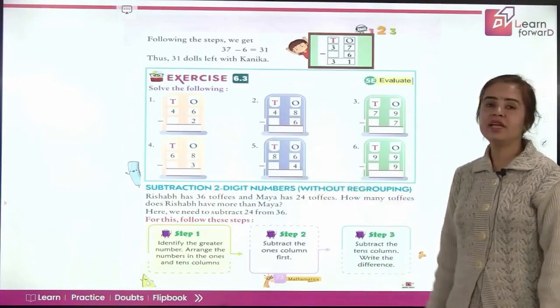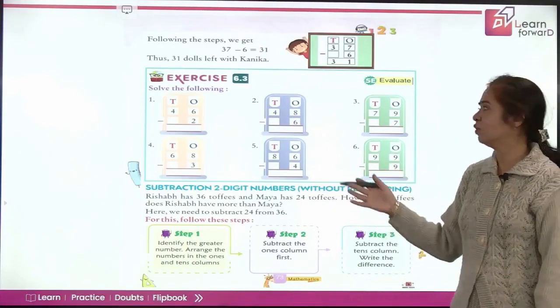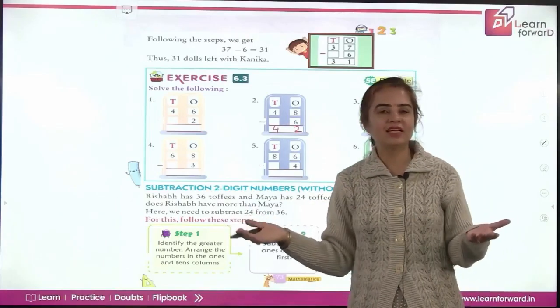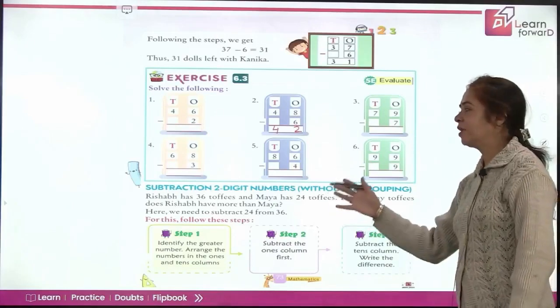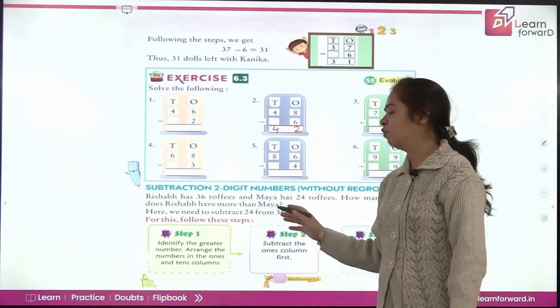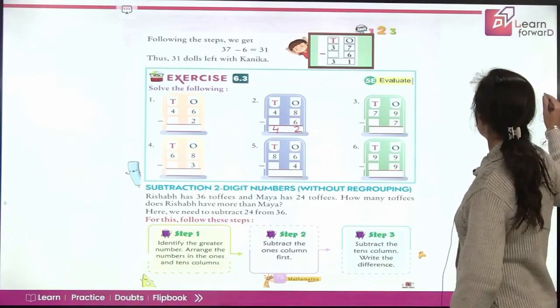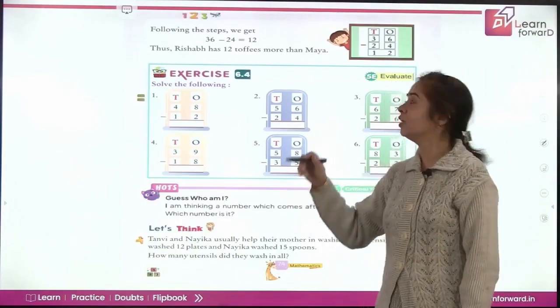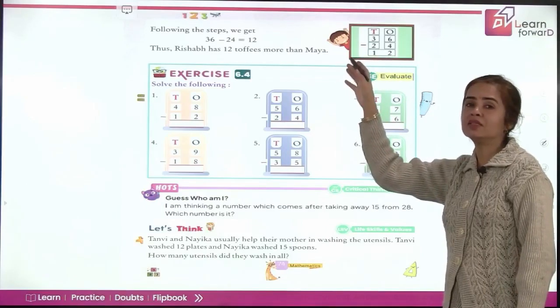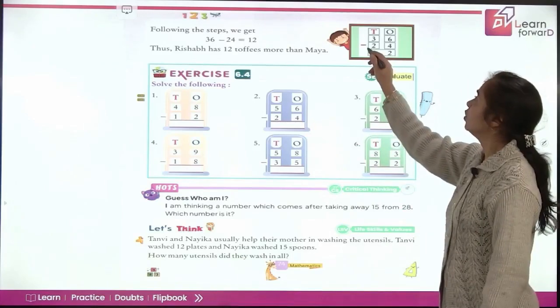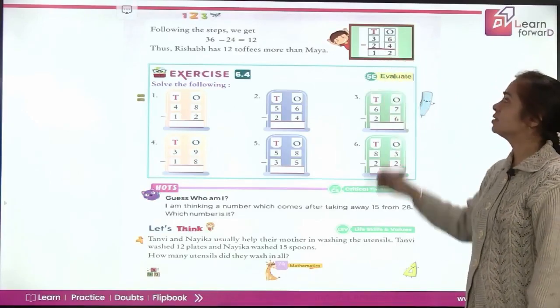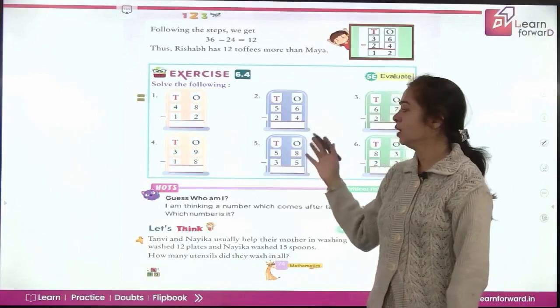Right? Now you have an exercise for you. Solve the following. 48 minus 6. Numbers are already perfectly written for you. Let's start subtracting from the ones place. 8 minus 6 is 2 and you get 4 as it is here. So what's the difference? The answer is 42. Now we will be subtracting two digit numbers without regrouping. So if you have two digits the same steps, let's subtract 24 from 36. So what number will you pick first? You will pick 36. But before that we will write tens and ones. So this is t o. You will pick 36 and you have to write 24 carefully below it.